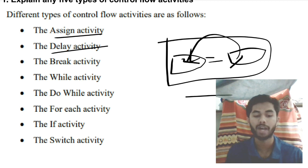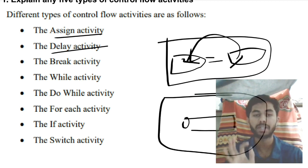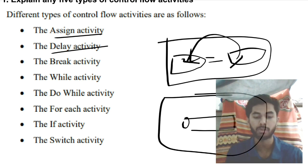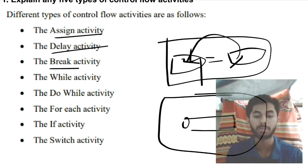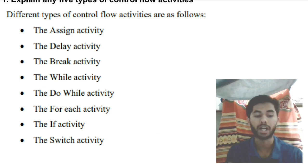Delay activity means you will have a box and there will be a delay. If you use this, it will be delayed for a particular amount of time between two operations. Break activity — if you want to come out of an execution statement you will be using break. It will just be a box with 'break' written in it. While activity will execute until a condition gets false.